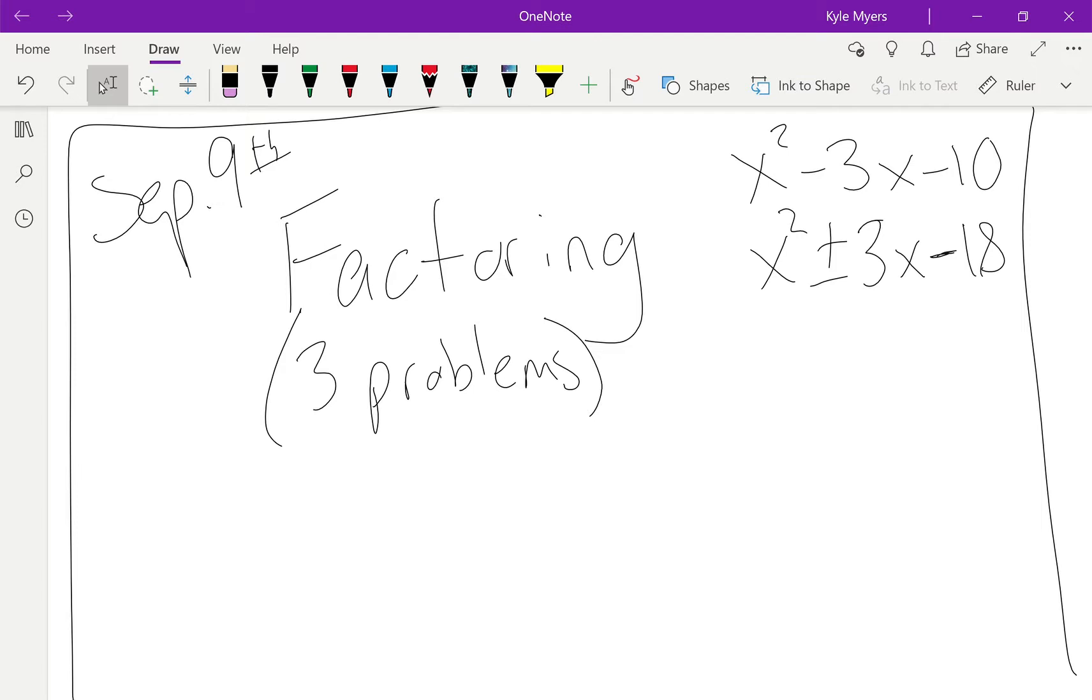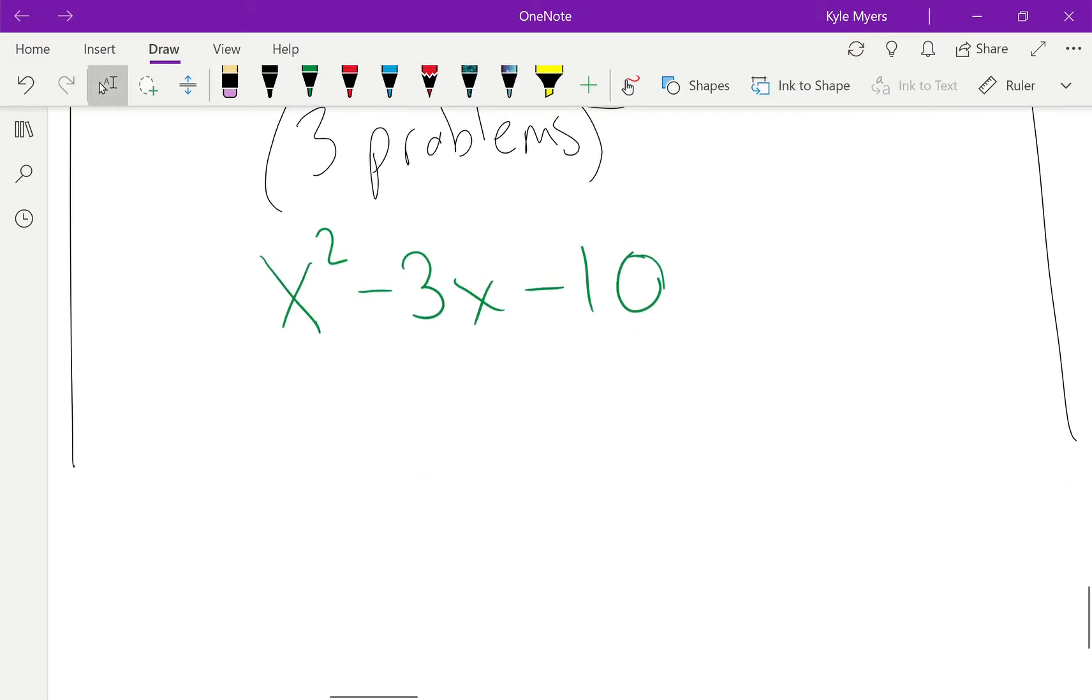So without further ado, let's just jump right in. So we've got x squared minus 3x minus 10. All right, so all I'm going to do is I want two things that multiply to give me the last number. That's how it works. Whenever you factor, you want two things that multiply to give you the last number and they add or subtract to give you the middle number.